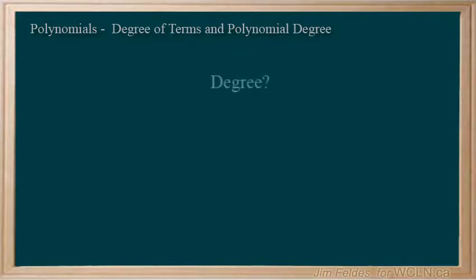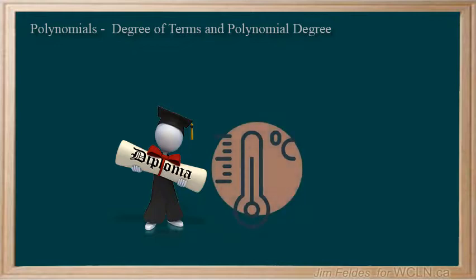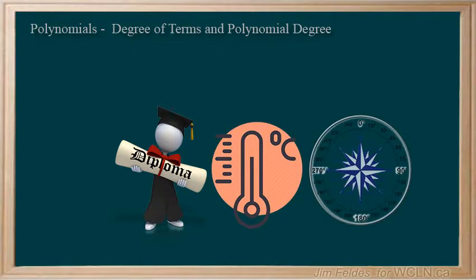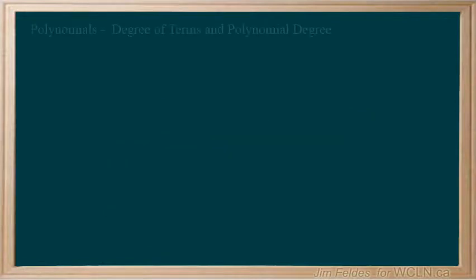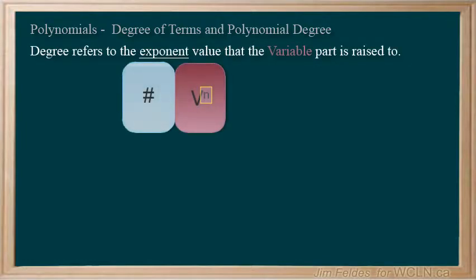So what do we mean when we say degree? Degree can have many meanings. You certainly can earn a degree, feel a degree, or find a direction or angle of degree. Polynomials can also be described as having a degree. This relates to the exponent value of the variable part of the terms within the polynomial. Let's first look at some terms to clarify the idea of degree.